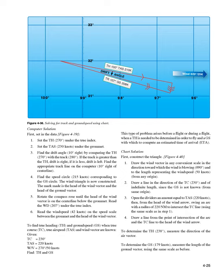5. Rotate the compass rose until the head of the wind vector is on the center line below the grommet. Read WD — 207° — under the true index. 6. Read the wind speed — 42 knots — on the speed scale between the grommet and the head of the wind vector. To find TH and GS when TC, TAS, and wind vector are known. Given: TC = 230°, TAS = 220 knots, WV = 270°/50 knots. Find: TH and GS.